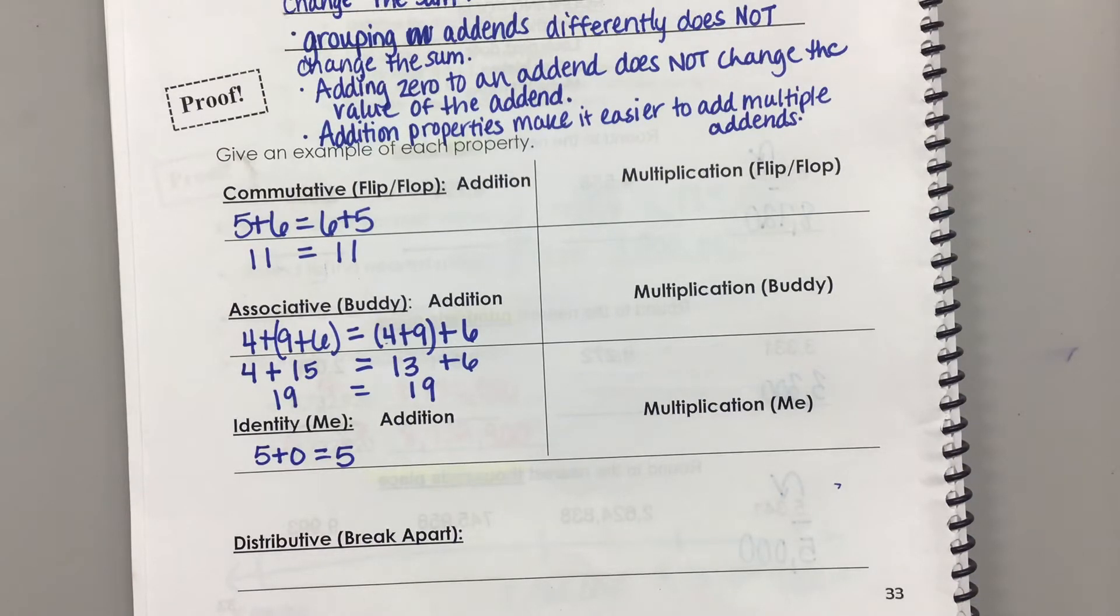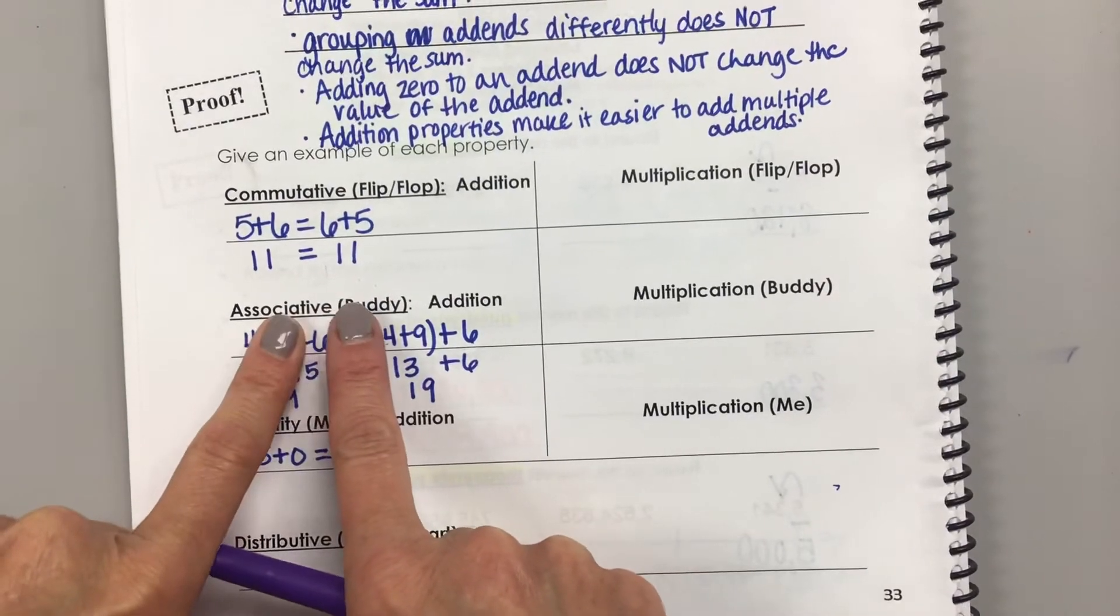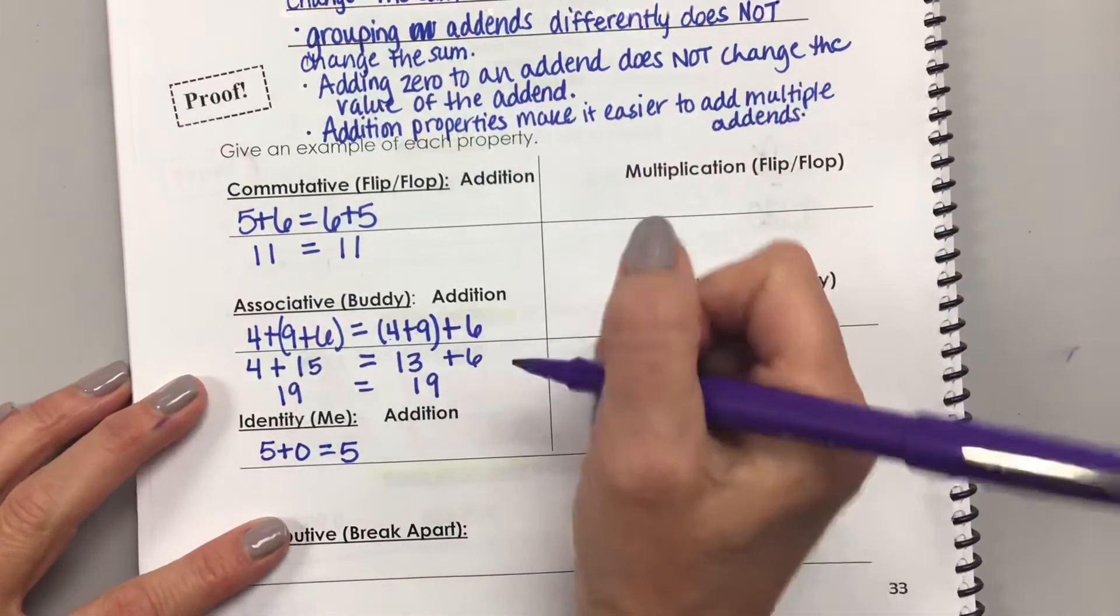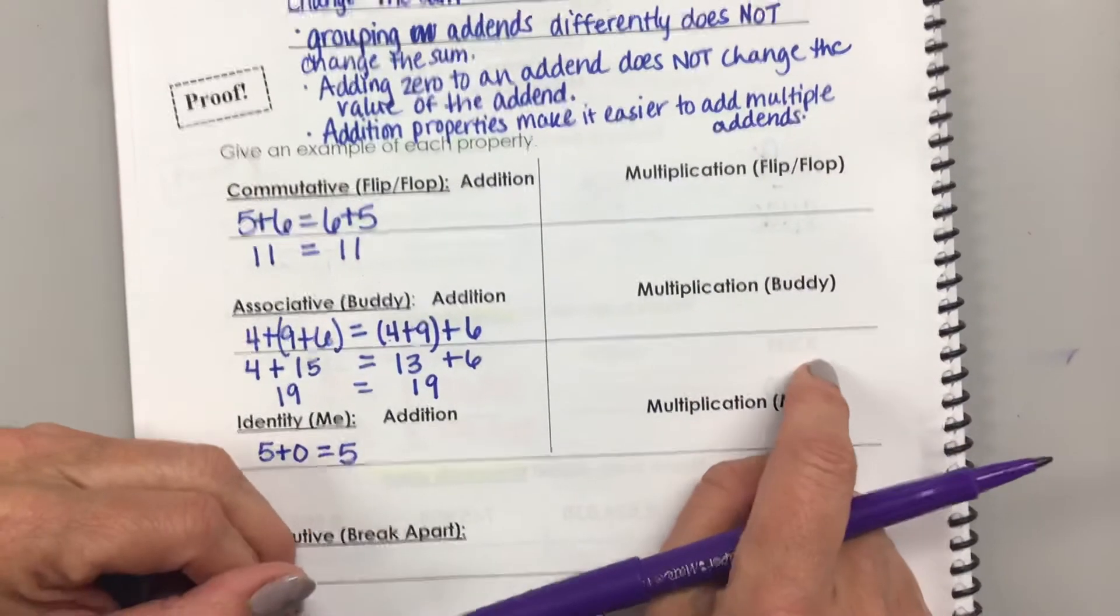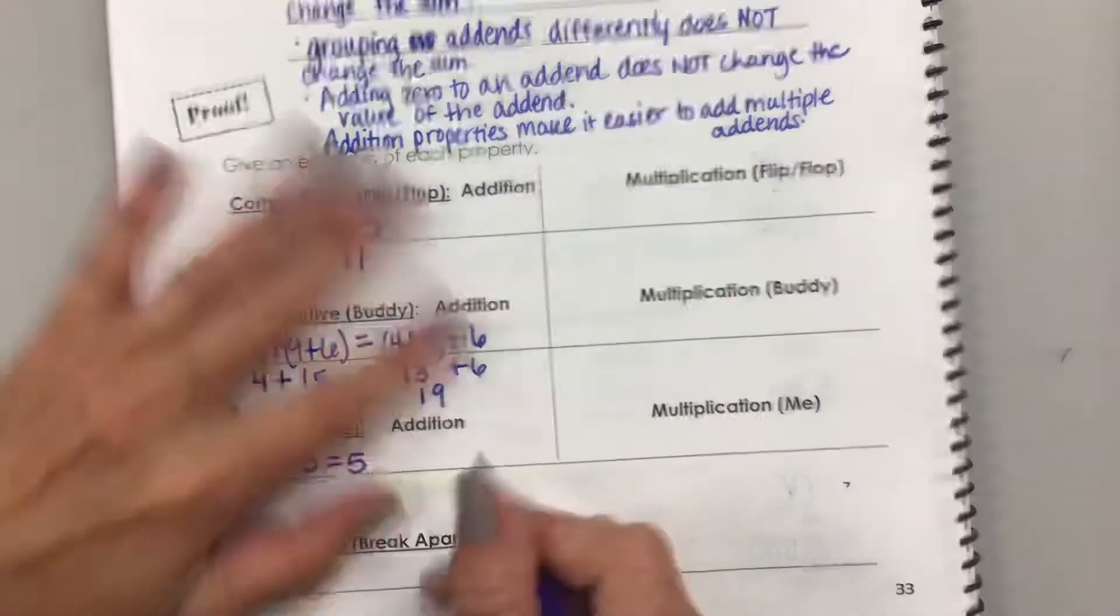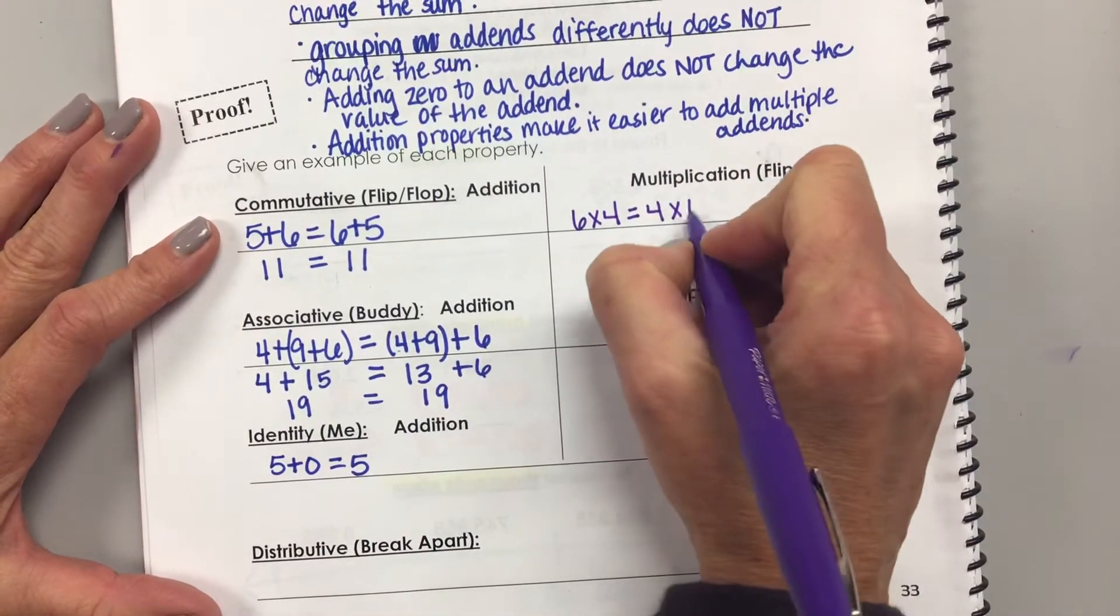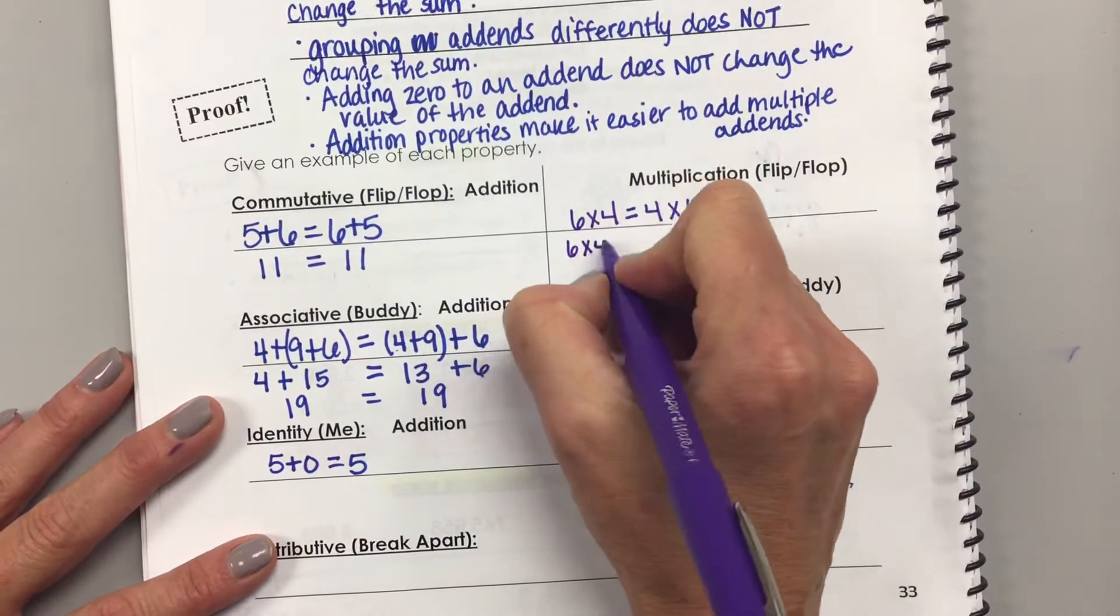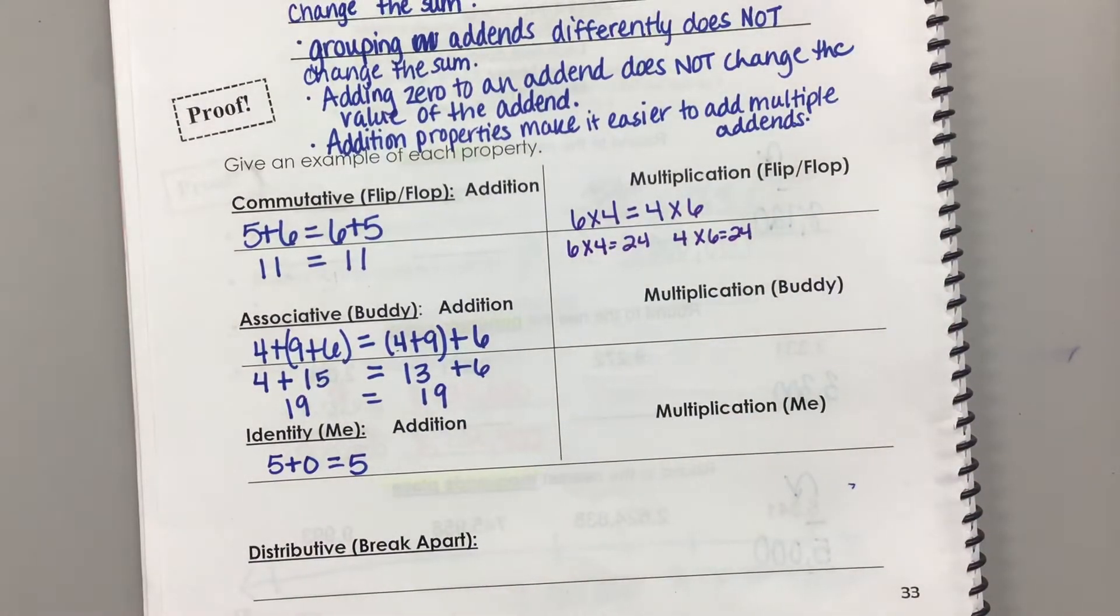The properties of multiplication. The commutative property of addition says that I can add numbers in any order. I'm waiting. I can add numbers in any order and I will get the same sum. The commutative property of multiplication says the same thing. I can multiply numbers in any order and get the same product. Give me an example. Landon. Well, that's not a good example because they're the same factor. Give me a different example. Six times four is equal to four times six. They are both equal to 24. You can write that like this, or you could write six times four equals 24 and four times six equals 24.